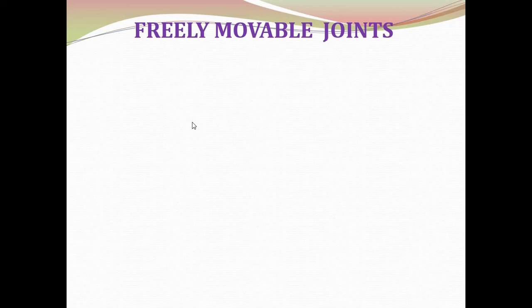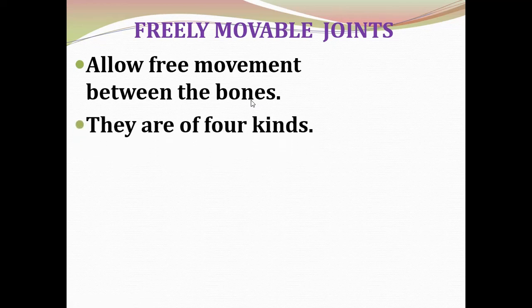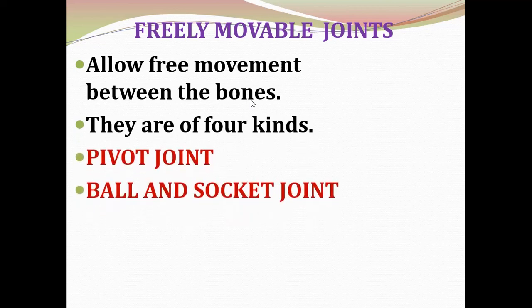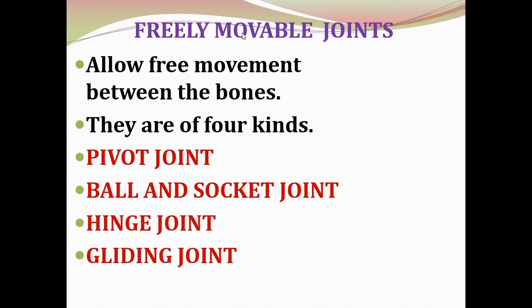Freely movable joints allow free movement between the bones. There are four kinds of freely movable joints: pivot joint, ball and socket joint, hinge joint, and gliding joint.